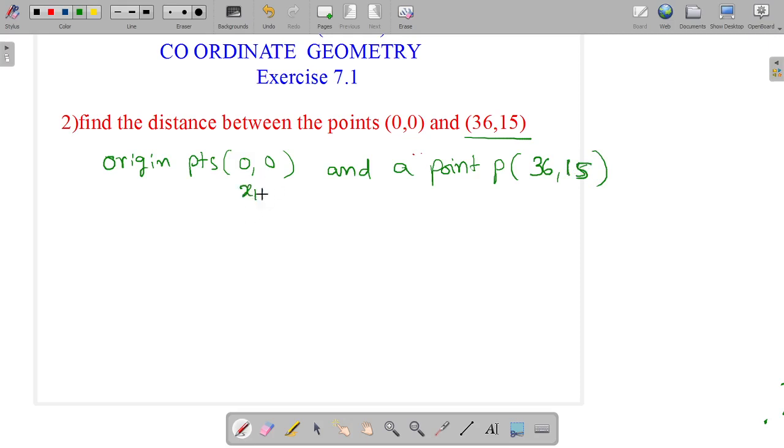This is x1, y1, this is x2, y2. So what is the distance between two points formula? Root of (x2 minus x1) squared plus (y2 minus y1) squared.